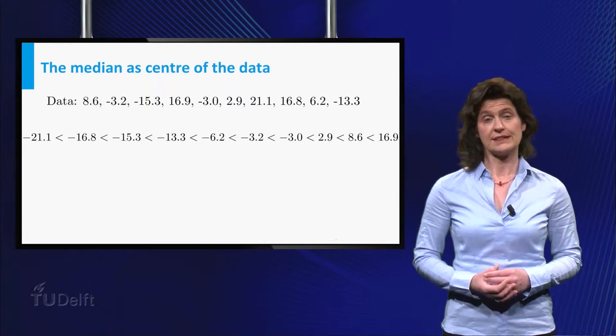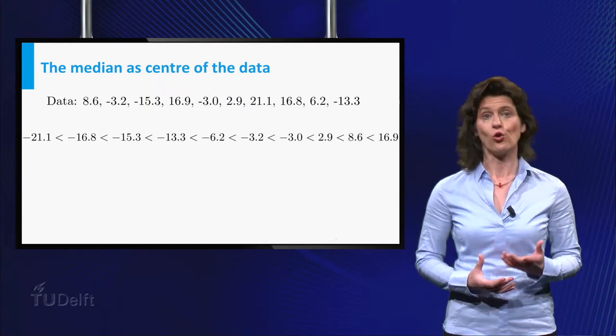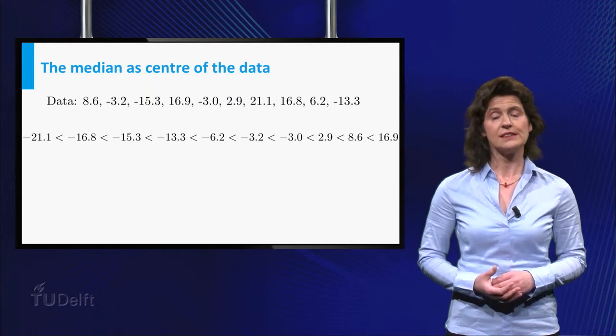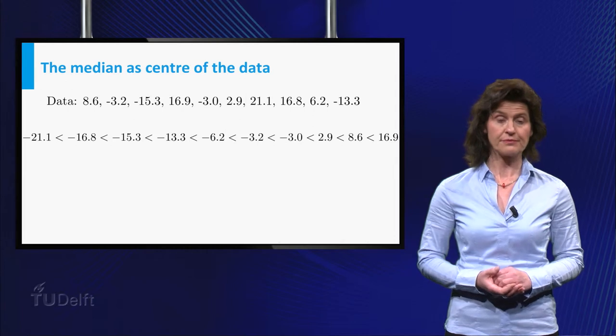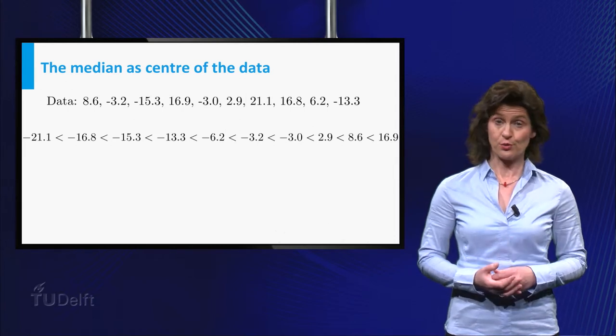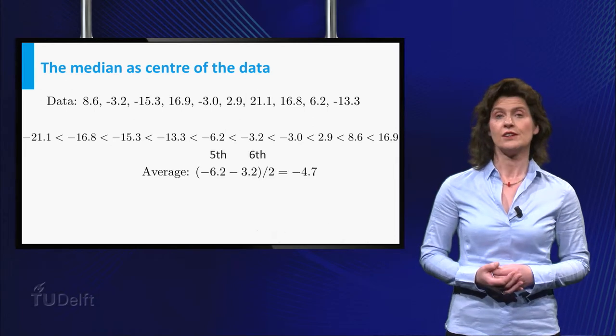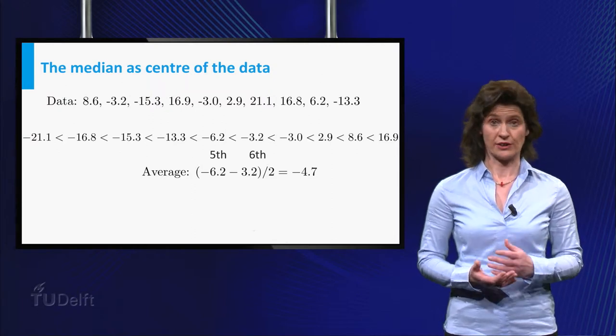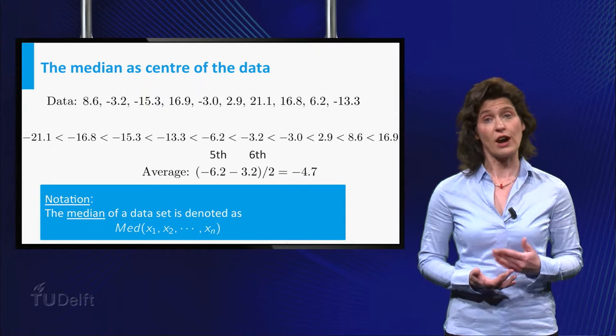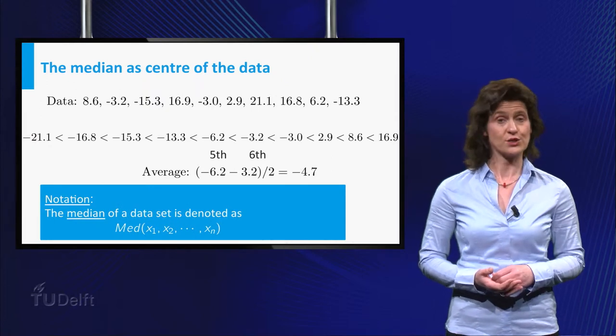If the number of points in the dataset is odd, and all data points are distinct, the median is uniquely defined as the middle observation. If there is an even number of points in the dataset, as here, you choose the average of the two middle points as median, as is done here. So the median of our dataset is equal to minus 4.7.